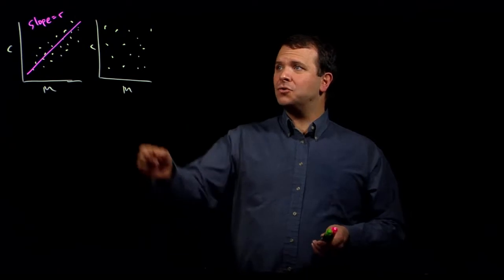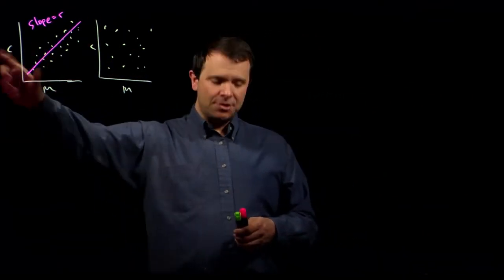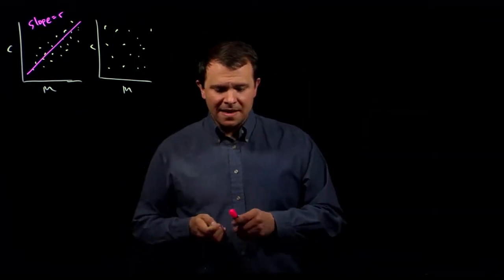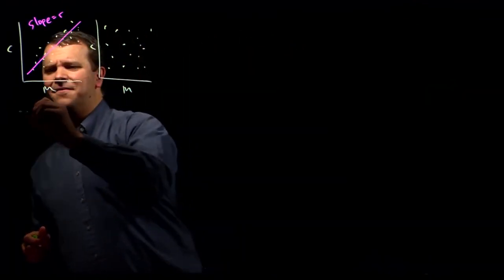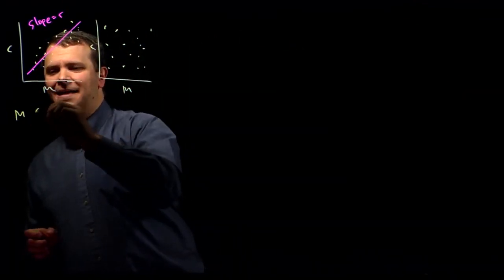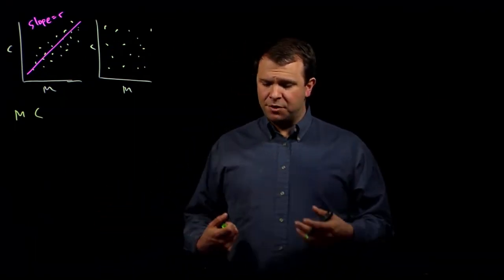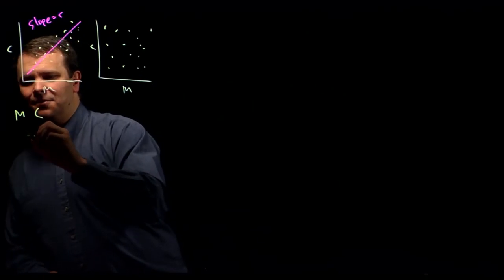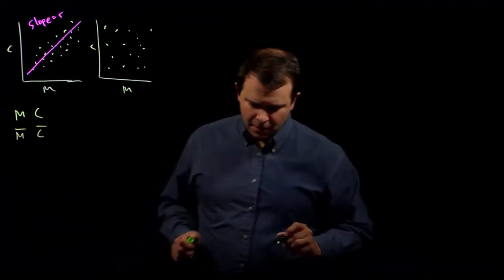How do you actually compute this value if you have these two lists? Well, it's actually pretty easy. So, if you have these two data sets, you have data sets M and C in this particular example, we start by computing the means of those two data sets. So, let's say M bar and C bar.